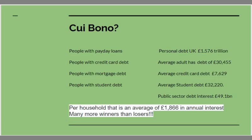The public sector is paying £49 billion a year in interest on public sector debt. Even ignoring the extra taxes to pay the national debt, the average household is paying £1,800 in annual interest. There are clearly far more winners than losers if you abolish interest payments.